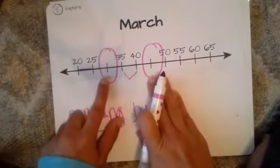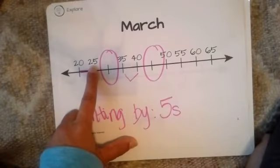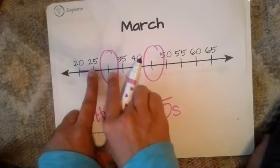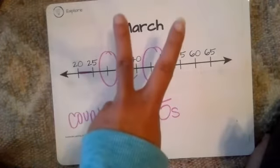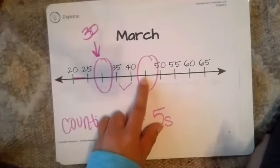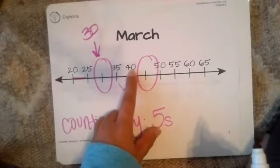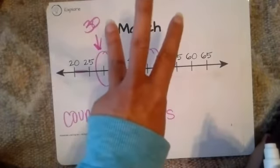Now we've got to figure out these missing numbers. We have 25 as our starting point and we need to figure out this missing number. So 25, 26, 27, 28, 29, 30. Then for the next missing number: 40, 41, 42, 43, 44, 45. Remember I'm counting by fives.